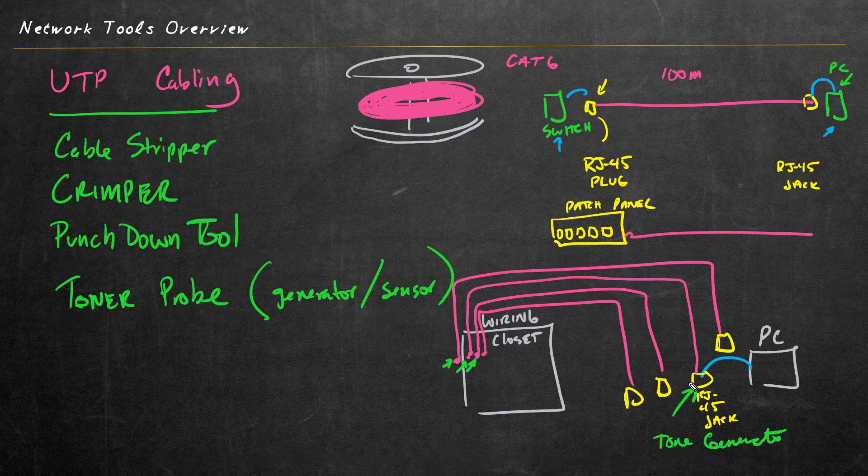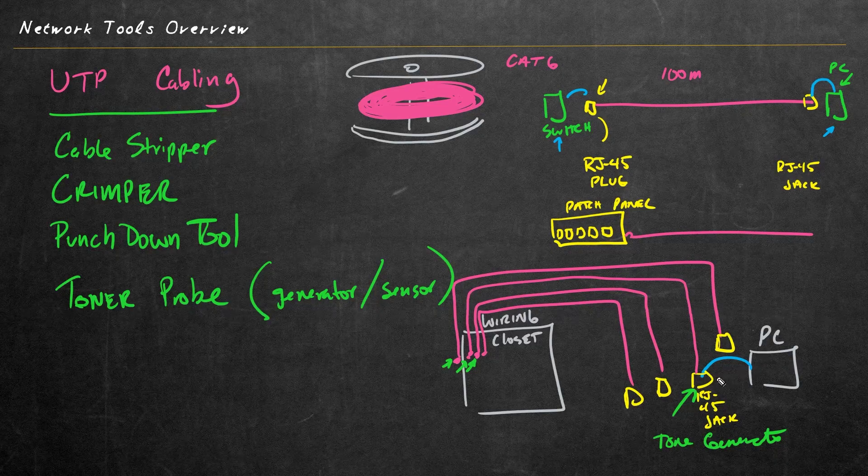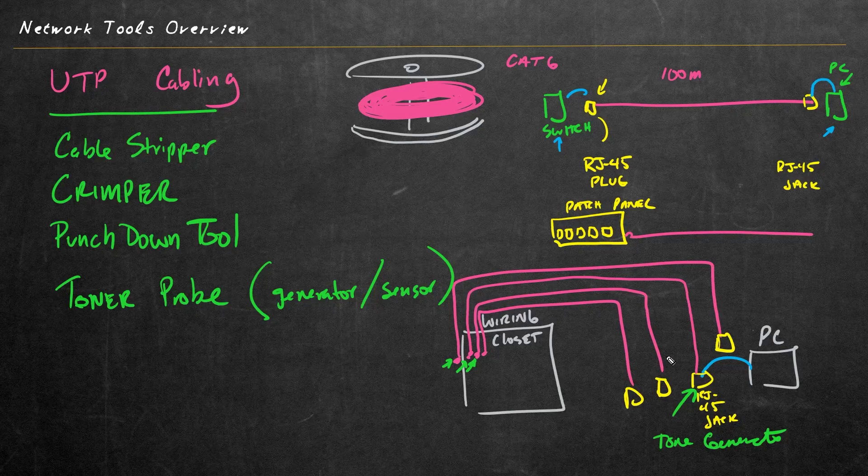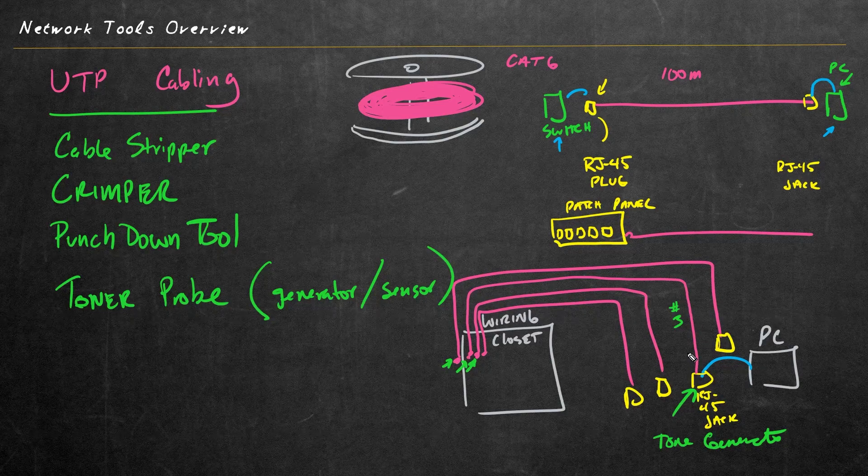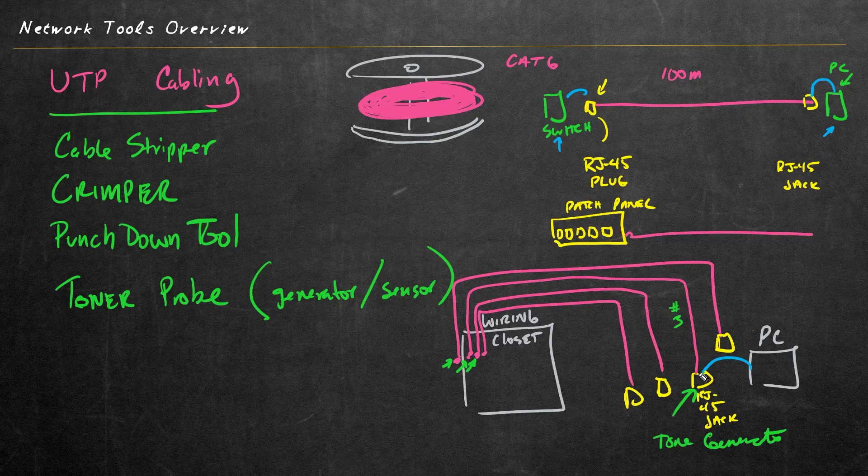And maybe we had a two-fold problem. Maybe this user, this PC, said they were having intermittent communications problems, and we wanted to verify that this run, we'll call it run number three here, we want to verify that run number three was okay. Meaning that it didn't have any shorts or opens and that the pinouts were correct on both ends. So how do we verify something like that? The answer is a cable tester.